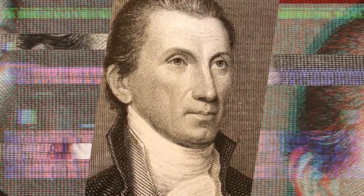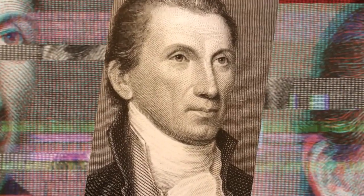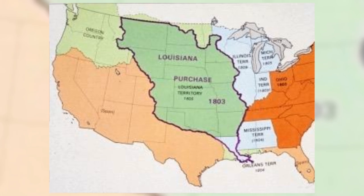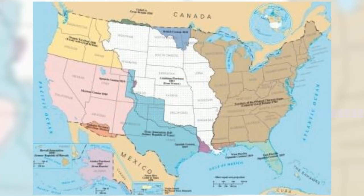Say hello to James Monroe — he played a massive part in the negotiations leading to the Louisiana Purchase. 14 years later, he would become president of the United States. This is Napoleon Bonaparte, the leader of France at the time of the Louisiana Purchase. This is Thomas Jefferson, the third president of the United States, who is responsible for the negotiations that led to the purchase of the large territory known as Louisiana.